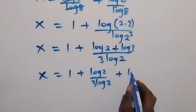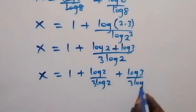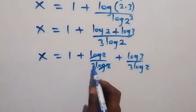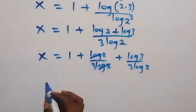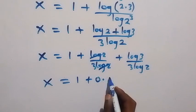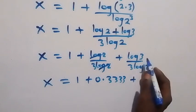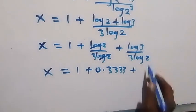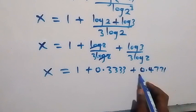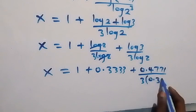Then plus log 3 over 3 log 2. From here, log 2 cancels log 2 in the first fraction, leaving 1 over 3. So x equals 1 plus 1 over 3, which is 0.3333 to 4 decimal places, then plus log 3 over 3 times log 2. Substituting, log 3 is approximately 0.4771 and log 2 is approximately 0.301.